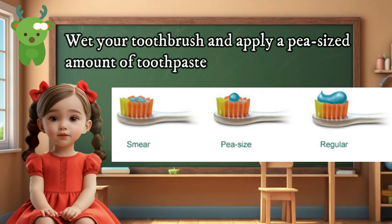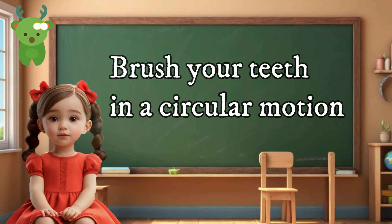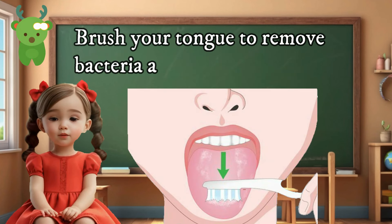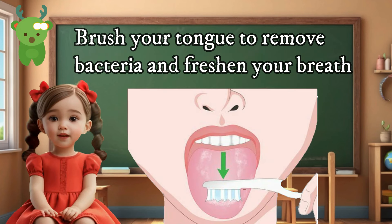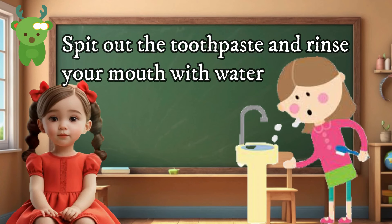Here are the steps to brush your teeth properly: wet your toothbrush and apply a pea-sized amount of toothpaste. Hold your toothbrush at a 45-degree angle to your teeth. Brush your teeth in a circular motion, making sure to brush the front, back, and top of each tooth. Brush your tongue to remove bacteria and freshen your breath. Spit out the toothpaste and rinse your mouth with water.